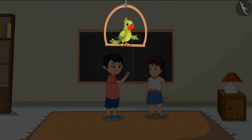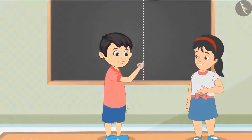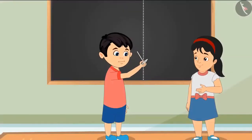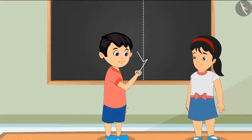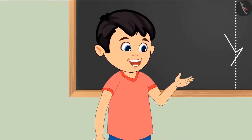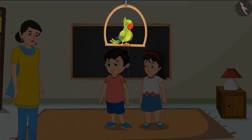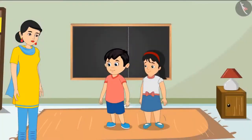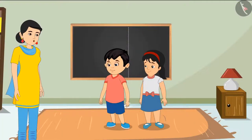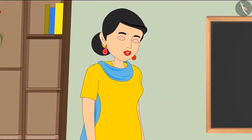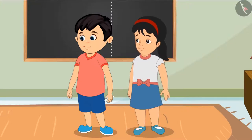Chotu and Pinky are both drawing on the blackboard. Pinky tells Chotu he can't draw in her space. Chotu disagrees, saying Pinky has plenty of space. Their mother comes in and suggests they measure their spaces to see who has more.